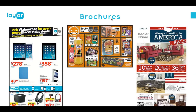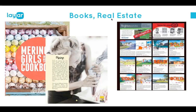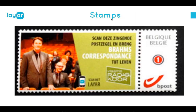We see lots of brochures come by on our platform: brochures from Walmart, a Halloween promotion, and a furniture dealer chain where several dealers could use one standard brochure. We also have billboard examples — a New Zealand example on the left, and in Holland on train stations you can get a five euro discount at the local Amazon when you scan that poster. Books and real estate brochures are also done.